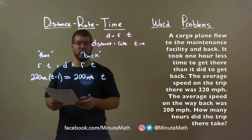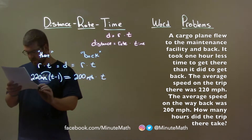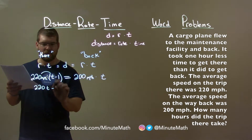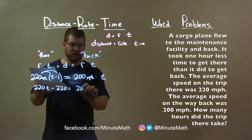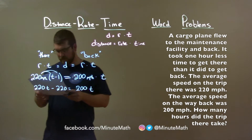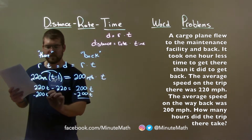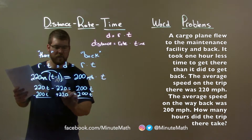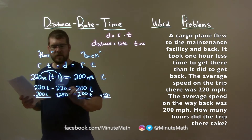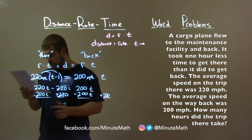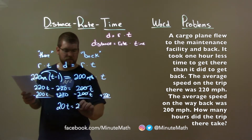Now we have an equation with one variable; we can solve for t. Distribute: 220 times t is 220t, minus 220 times 1 is 220. And then we just have 200t on the other side. Subtract 200t from both sides — keep your like terms — and add 220 to both sides. These cancel, and 220t minus 200t is 20t. These cancel again, leaving 220.